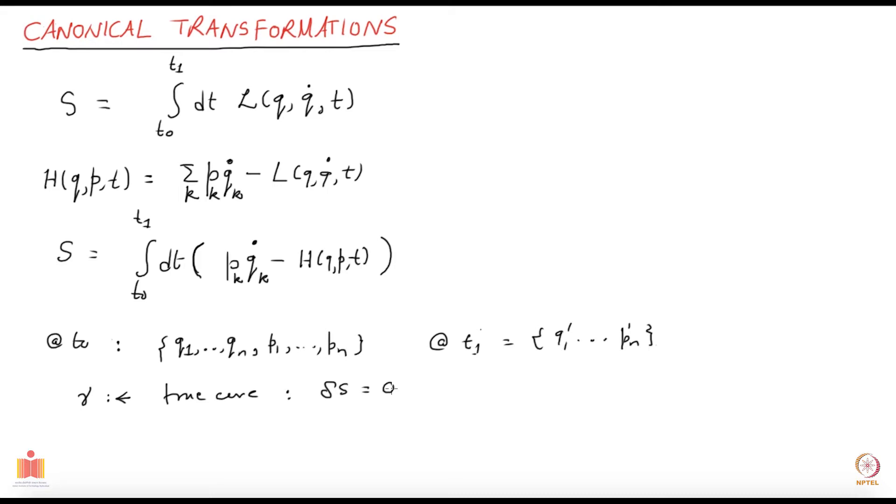Now here, unlike the case of Lagrangian dynamics, we can treat not only the q's but also the p's as independent and vary them independently. In the Lagrangian dynamics, when we were doing a variation of the action, we were only changing the q's. But now in Hamiltonian dynamics, in addition to q's, I will take p's also independently and vary them.